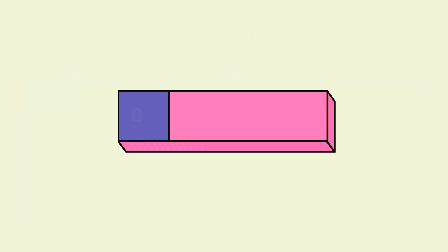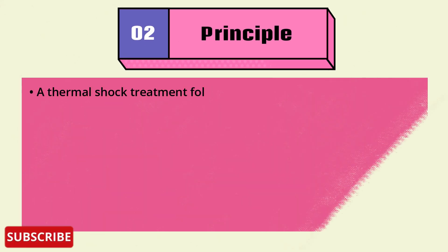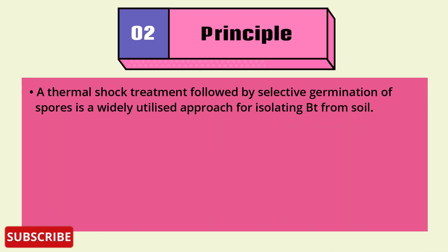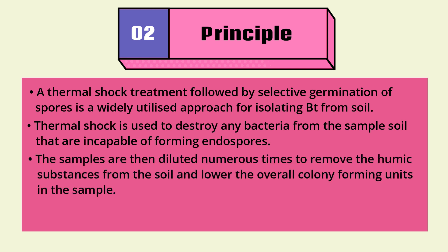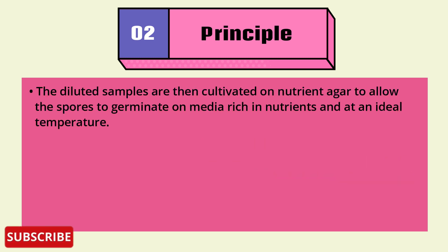The Bacillus thuringiensis isolation principle involves a thermal shock treatment followed by selective germination of spores — a widely utilized approach for isolating Bt from soil. Thermal shock is used to destroy any bacteria in the sample soil that are incapable of forming endospores. The samples are then diluted numerous times to remove humic substances from the soil and lower the overall colony forming units in the sample.